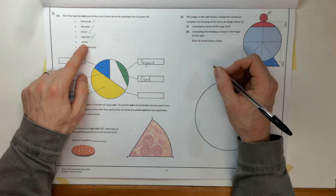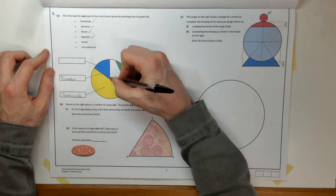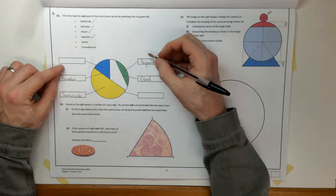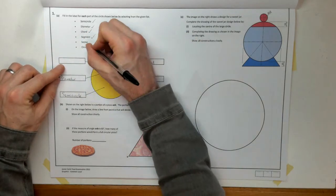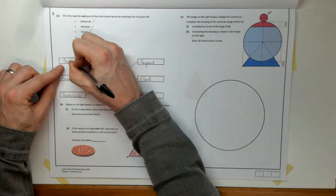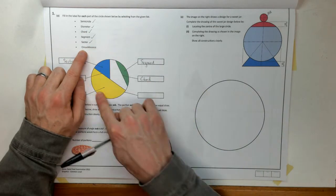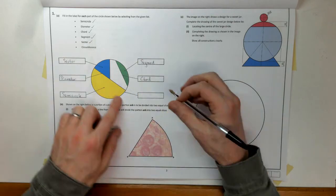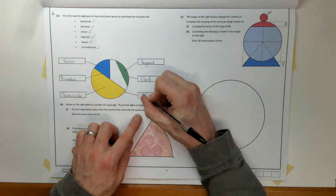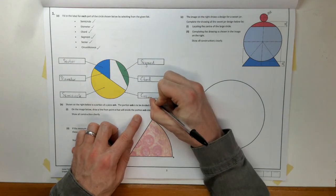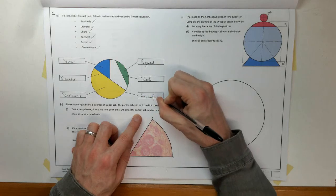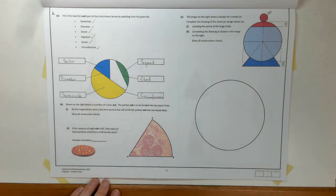A sector then, that's like a slice of pizza. So here's our slice of pizza, the blue section. So that is our sector. I'll tick that off also. What's left over is our circumference, which is the distance or the line going around the outside. So nice straightforward question to get us going.